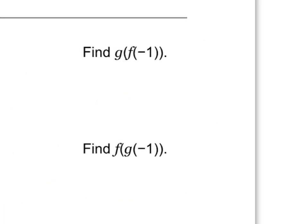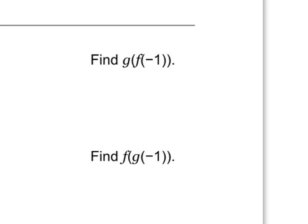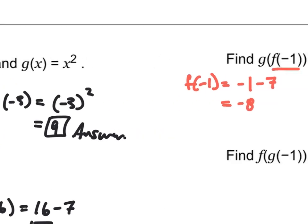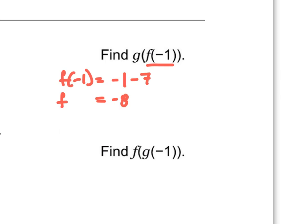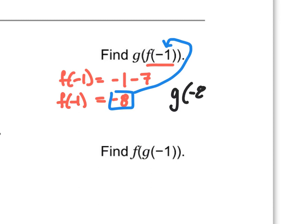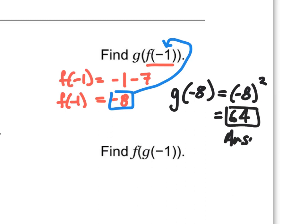Find g(f(−1)). Evaluate the inside function first: f(−1) = −1 − 7 = −8. Now plug −8 into g: g(−8) = (−8)² = positive 64. That's the answer. Evaluate your inside function first, get a y value, then plug that into function g and evaluate.